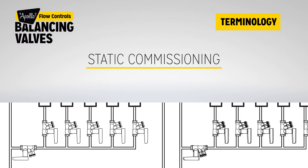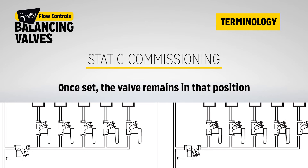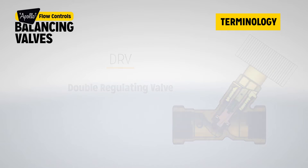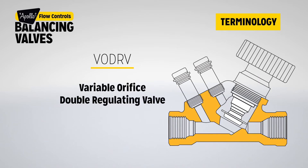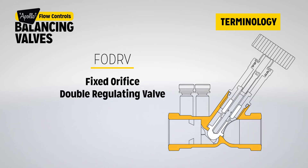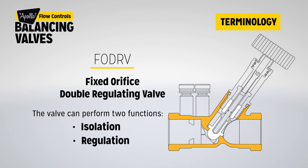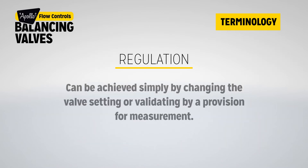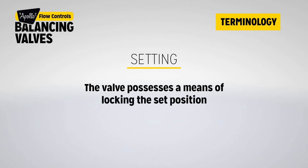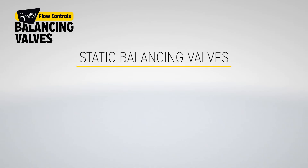Static commissioning terminology: once set, the valve remains in that position. DRV: double regulating valve. VO DRV: variable orifice double regulating valve. FO DRV: fixed orifice double regulating valve. The valve can perform two functions: isolation and regulation. Regulation can be achieved simply by changing the valve setting, with provision for measurement. The valve also possesses a means of locking the set position.